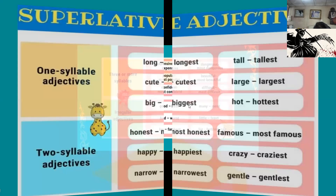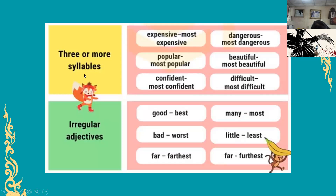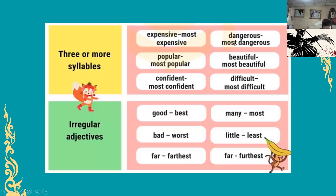For three or more syllables: expensive becomes 'most expensive' — three syllables: ex-pen-sive. Popular — three syllables — you use 'most popular'. Confident becomes 'most confident'. Dangerous becomes 'most dangerous'. Beautiful becomes 'most beautiful'. Difficult becomes 'most difficult'.